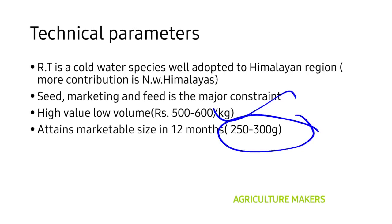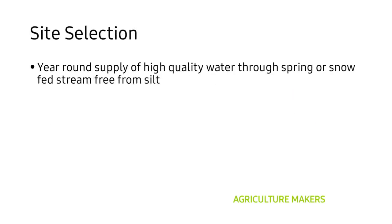Rainbow trout attains a marketable size of 250 to 300 grams. Coming to cultivation, the first step is site selection. The site selected should have a year-round supply of high-quality water through a spring or snow-fed stream, and this water should be free from silt.